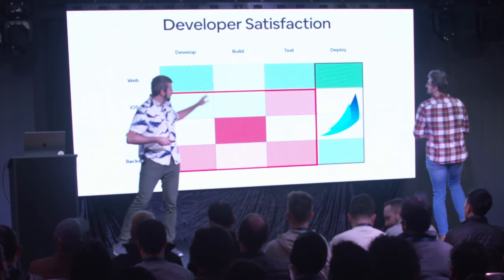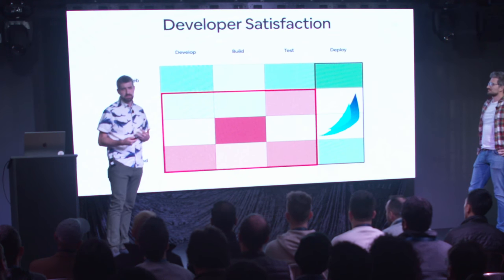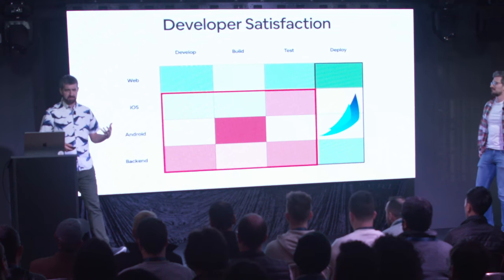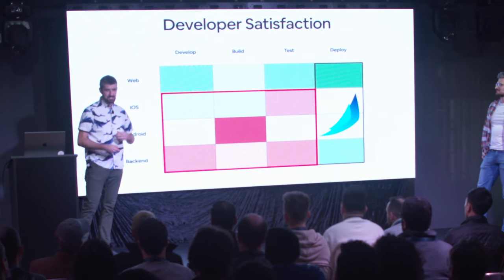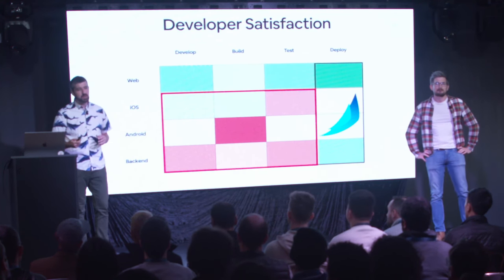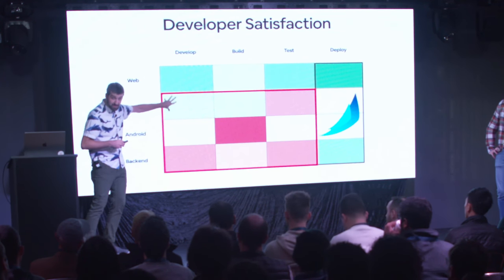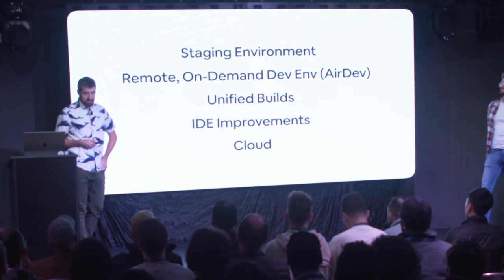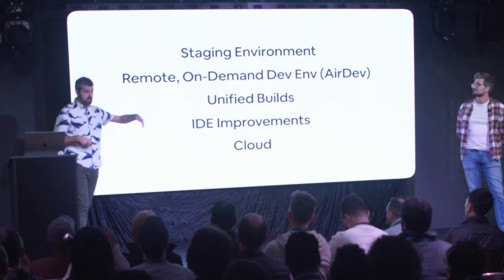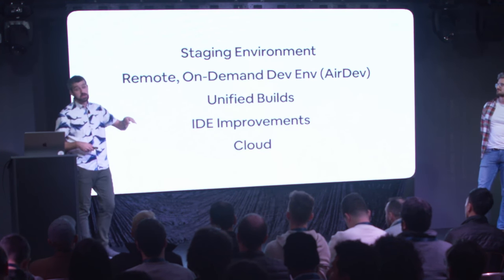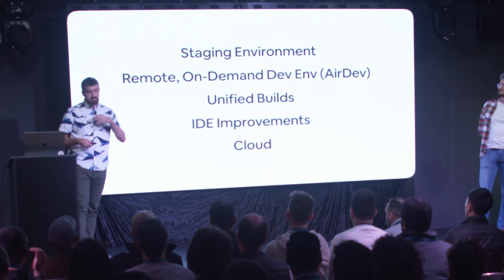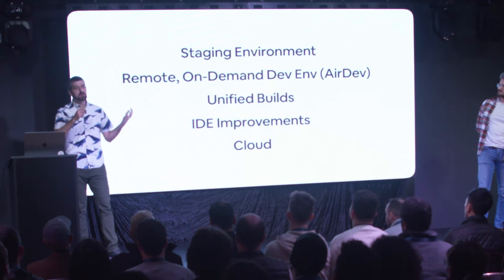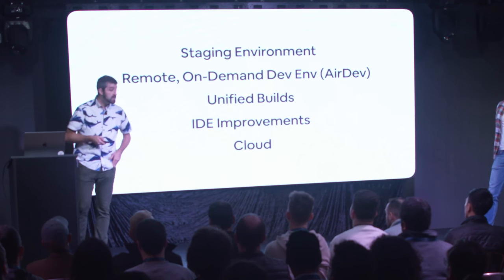One of the things we realized as we went through each square to try to make them green is that small incremental things just weren't going to cut it. We needed a complete transformation of the entire development environment — also because of Airbnb's work-from-anywhere policy. We identified five strategic initiatives: a robust staging environment, a remote on-demand dev environment called AirDev, unified builds for all our polyglot language repos, IDE improvements, and moving everything into the cloud so your laptop doesn't catch on fire.